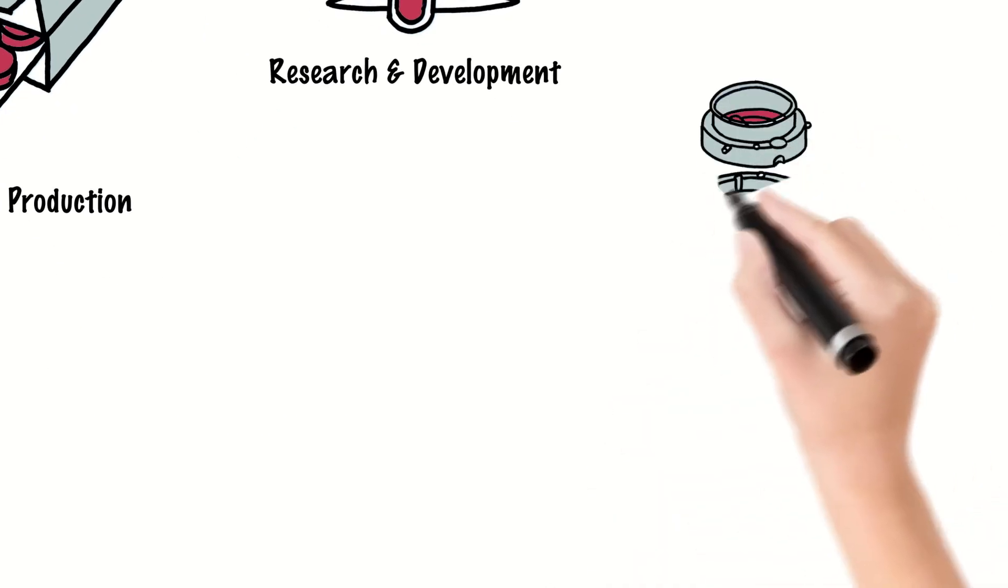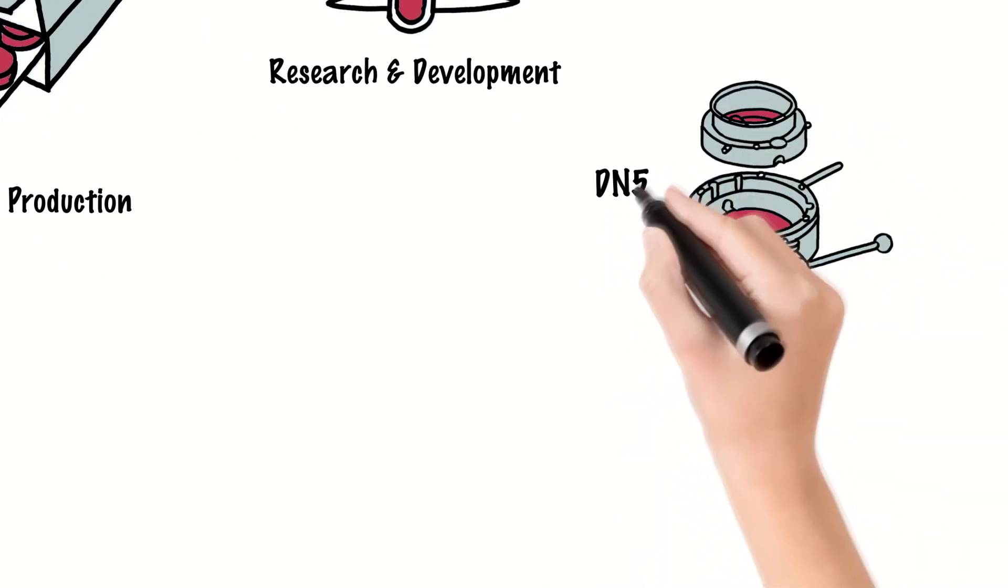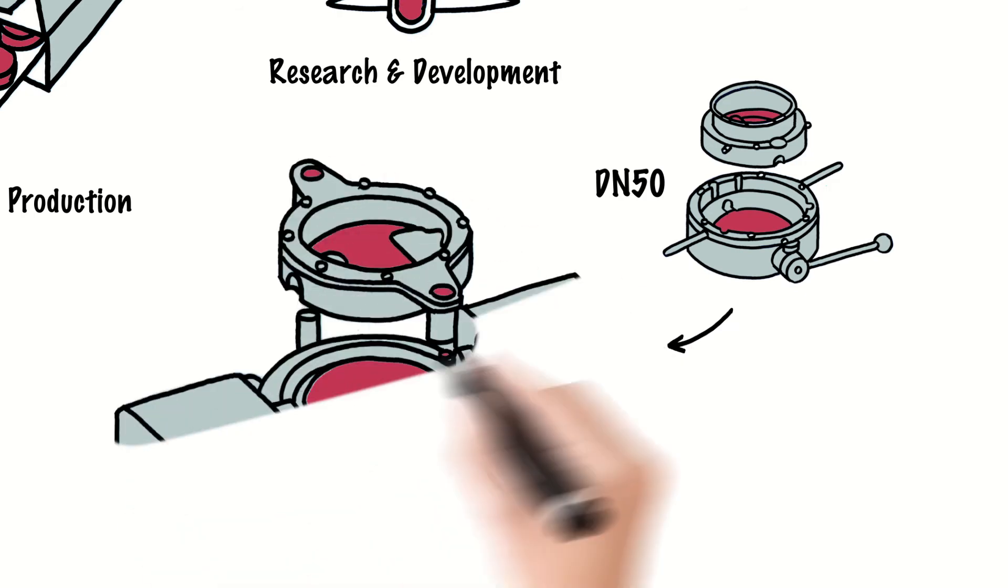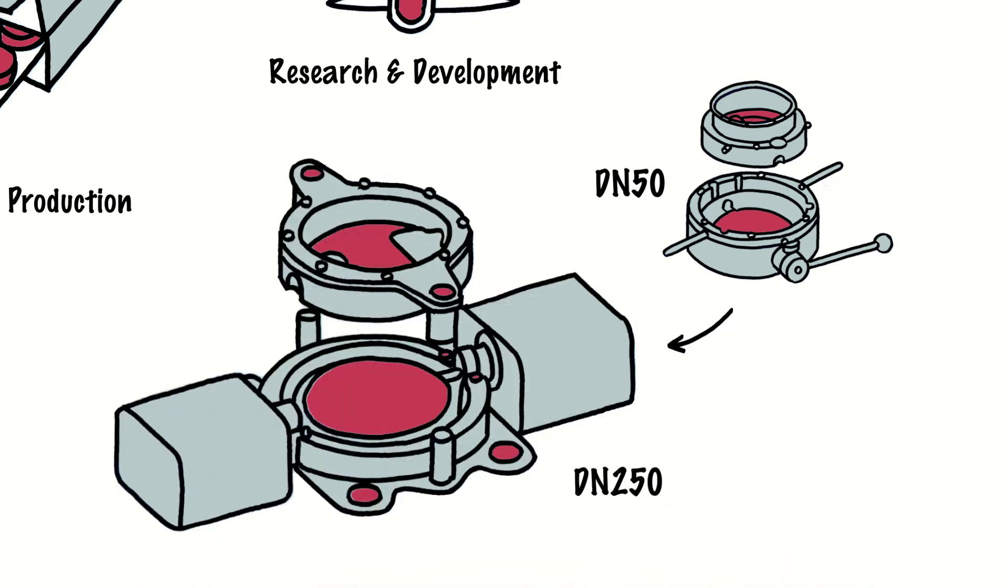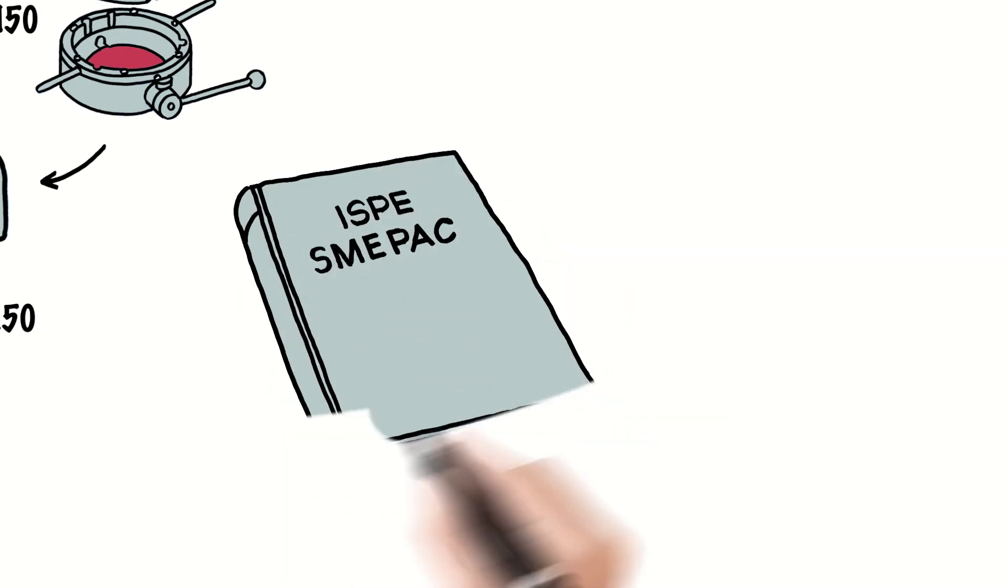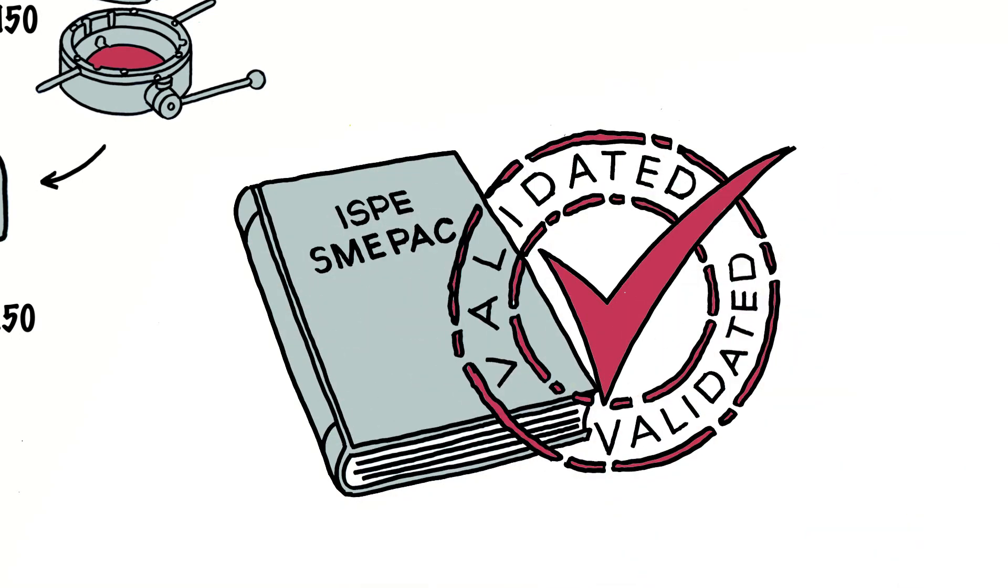PharmaSafe valves are available in sizes from 50 mm to 250 mm, making it an ideal solution for all production scales. Containment performance has been independently validated according to the ISPE guideline.